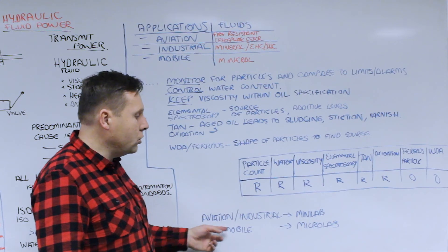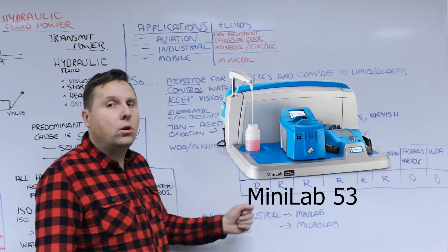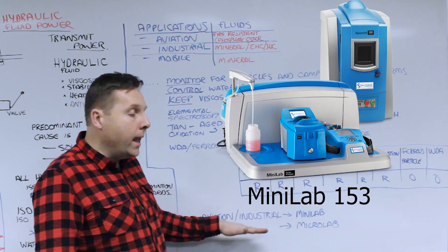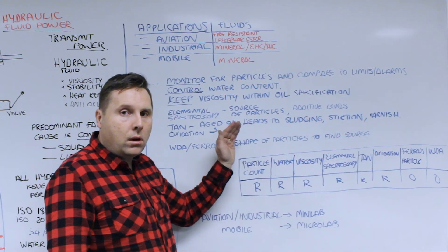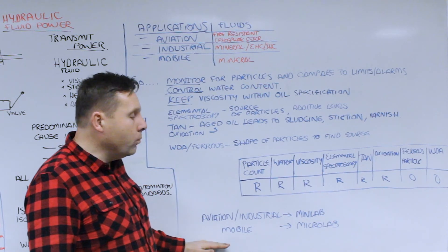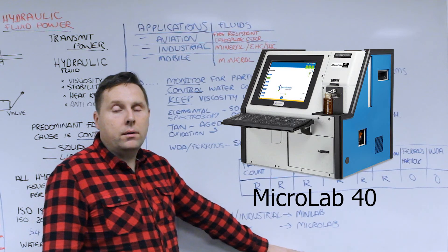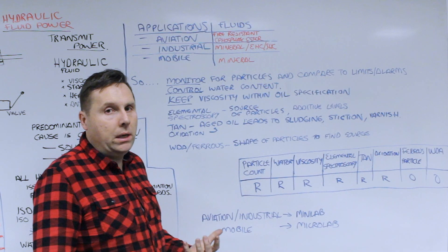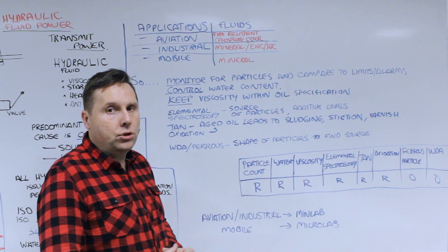For aviation and industrial systems we recommend that you look at the mini lab solutions because they have all the tools for that type of environment and the mini lab is able to handle phosphate ester type fluids that are often seen in aviation and some power generation applications. Mobile systems, the micro lab family of products is an ideal solution there because it is able to hit all the major elements that you need to identify if there's any problems showing up.